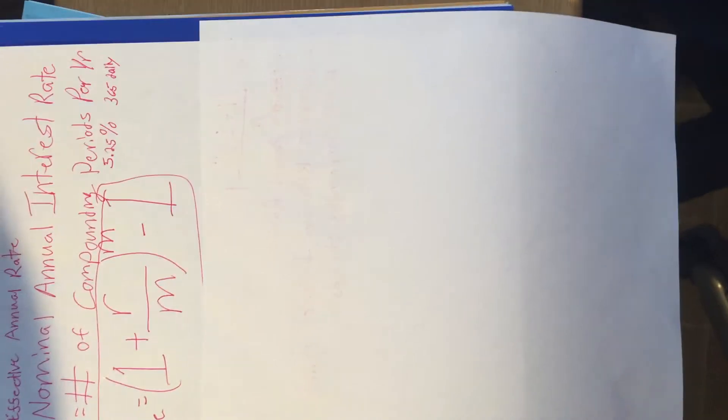Okay, so with the data we have, the rate is 5.25%, which is compounded 365 days a year. So it's compounded daily, per year, every day.